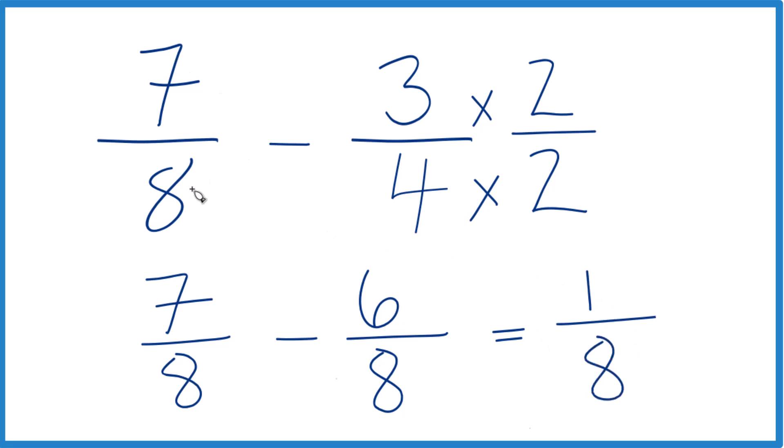So in answer to our question, 7 eighths minus 3 fourths, that gives us 1 eighth.